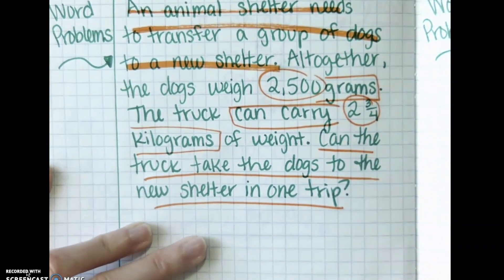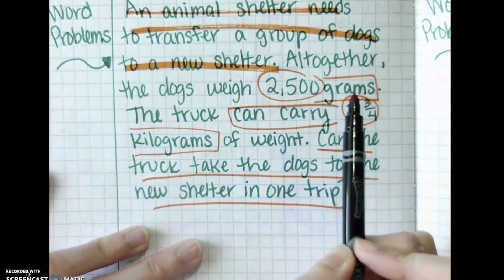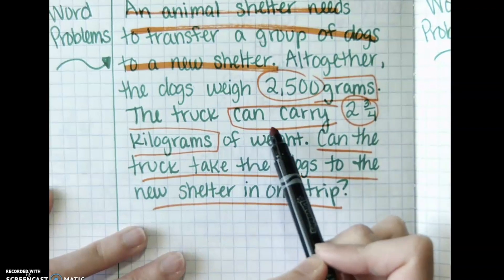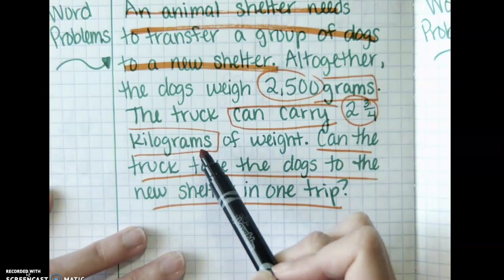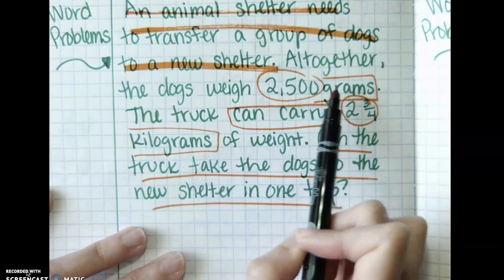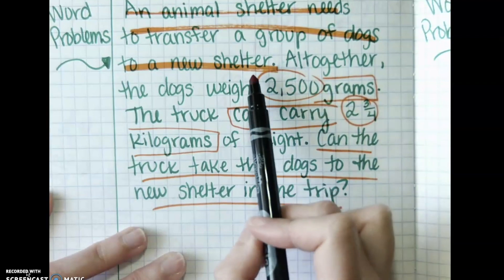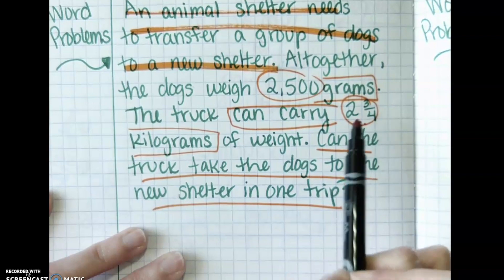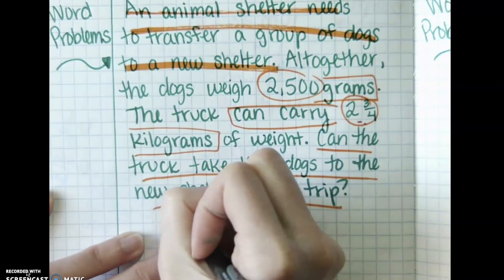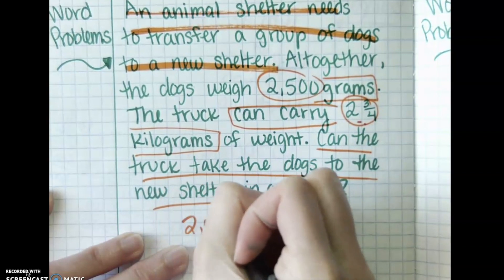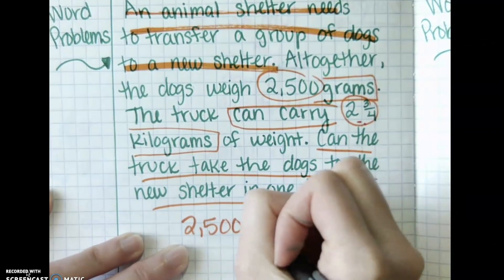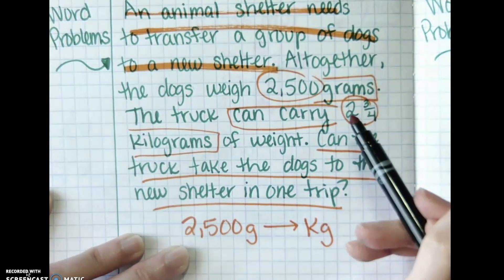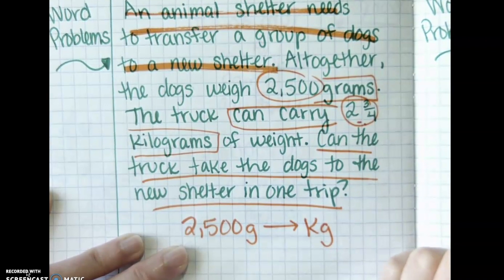All right, 2,500 grams is what the dogs weigh. We know that is a fact. We know the truck can carry 2 and 3-4 kilograms, but that doesn't tell us about whether the dogs can make it or not. We need to figure out if this much weight is the same or less than 2 and 3-4 kilograms. So, we have 2,500 grams, and we're trying to see how many kilograms that is to see if the truck can carry that many dogs at once in one trip.